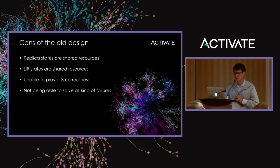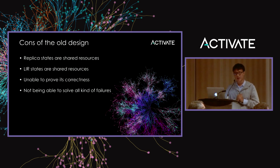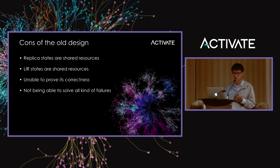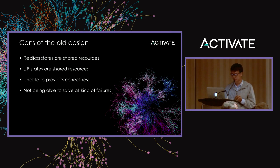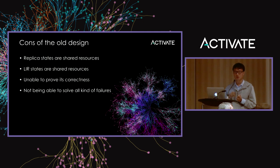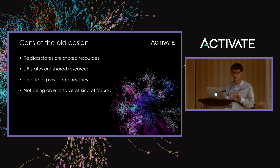What is the cause of the old design's problem? First, replica state and LIR state are shared resources. Shared resources in any distributed system are problematic — in a single node you can use locks to prevent race conditions, but in a distributed system shared resources are much harder to handle correctly. Second, if someone comes up with a patch to fix a previous failure, we cannot be sure a new problem won't arise from that fix. We are unable to prove correctness in all cases.